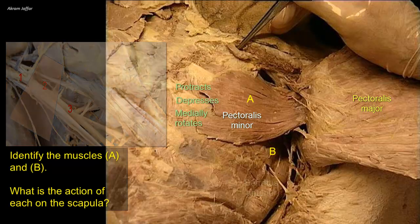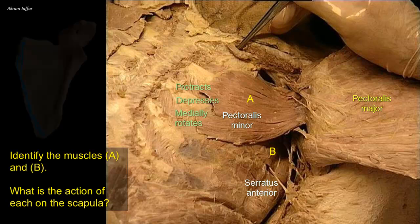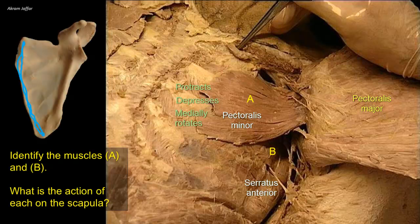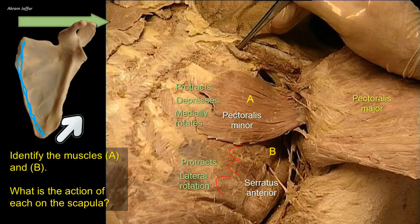The other muscle is serratus anterior, which extends from the upper ribs to the anterior surface of the medial border of the scapula. You can see here the serrated appearance of the muscle. It protracts the scapula — hence it is also called the boxer's muscle — and laterally rotates it so that the glenoid cavity faces upwards. This is important in abducting the shoulder above 90 degrees.